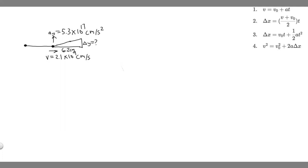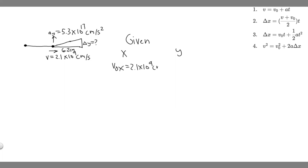The way you approach these problems is by finding the kinematic variables given in the x and the y. So for the x direction, the initial horizontal velocity is 2.1 times 10 to the 9 centimeters per second. Since they tell us the particle is only traveling horizontally, there's no vertical velocity — so v sub 0y, the initial velocity in the y, is 0 centimeters per second.